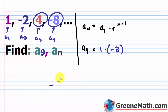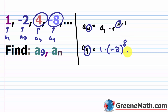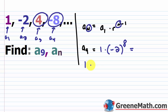Now, n minus 1: since we want a sub 9, n is 9, so 9 minus 1 is 8. Negative 2 to the 8th power is 256 — because the negative and the 2 are inside parentheses, it's all raised to the 8th power. So a sub 9 equals 1 times 256, which is 256.